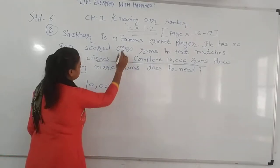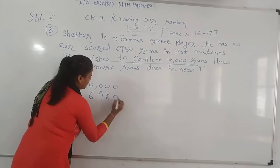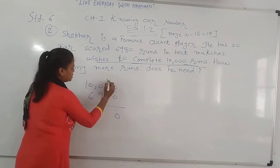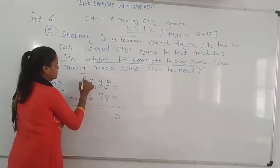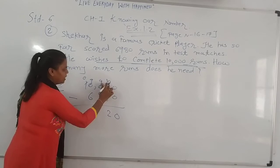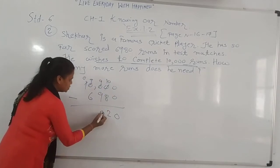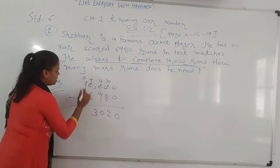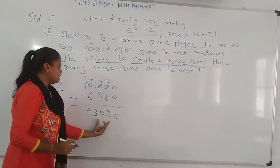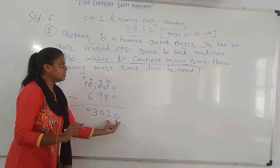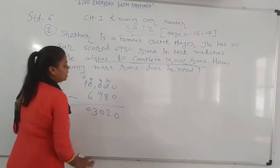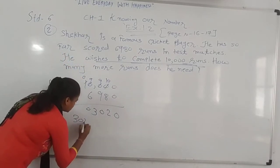So: 10,000 minus 6,980. 0 minus 0 is 0. 0 minus 8 is not possible, so we borrow: 10 minus 8 is 2. 9 minus 9 is 0. And 9 minus 6 is 3. So 10,000 minus 6,980 equals 3,020. He needs 3,020 more runs.